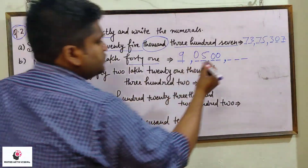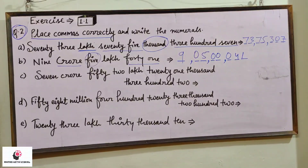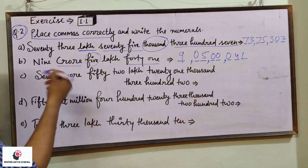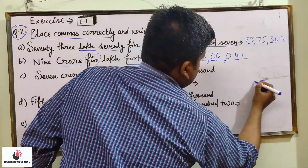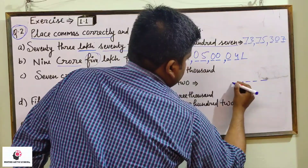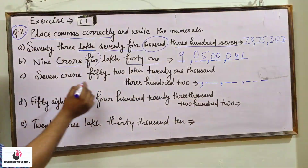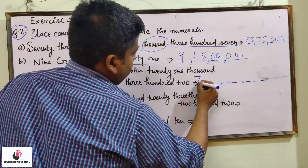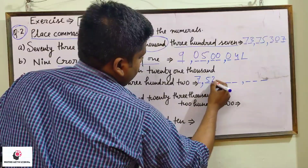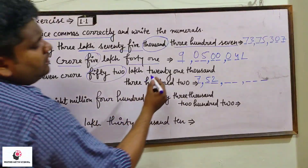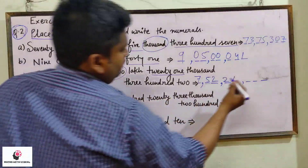There is no hundred either, so forty-one will be written as 0, 4, 1. Next: seven crore fifty-two lakh twenty-one thousand three hundred two. We are also reaching up to crore: ones, tens, hundreds, thousands, ten thousands, lakh, ten lakh, and crore. Seven crores, then fifty-two lakh — this is 52 — then twenty-one thousand — 21 — and three hundred two.